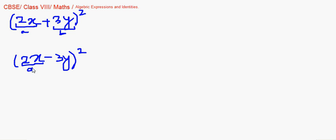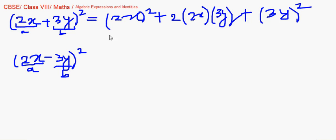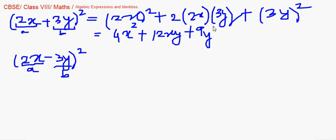We have seen the formula for (a + b) whole square. Here, a is 2x and b is 3y. So it becomes: (2x) squared plus 2 times 2x times 3y plus (3y) squared, which gives us 4x squared plus 12xy plus 9y squared.